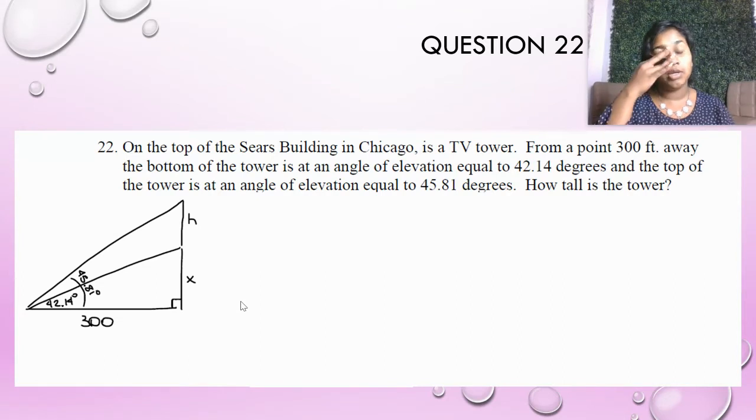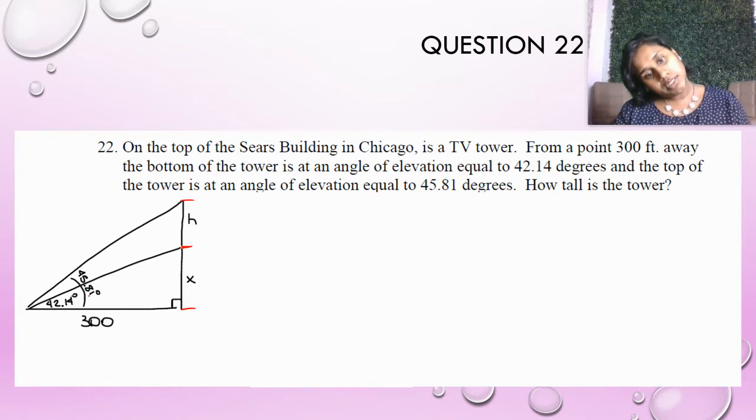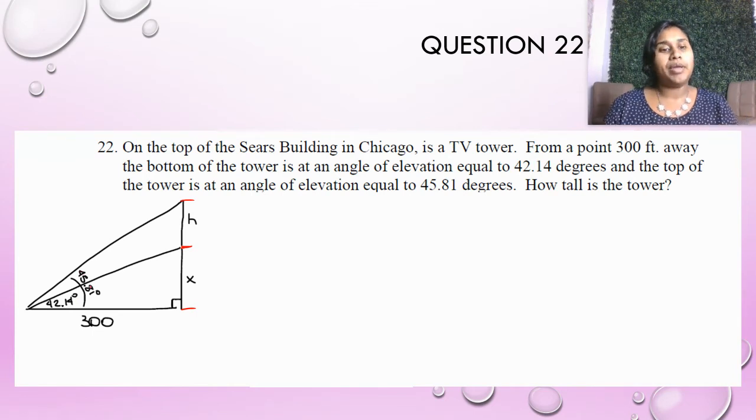So here's just the triangle to help me out. H is going to be a representative of the distance from here to here and X is this distance right here. And so again, this is what's happening here with my lines right here, 45.81.